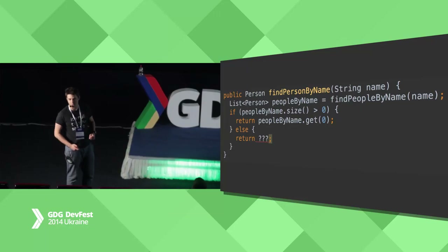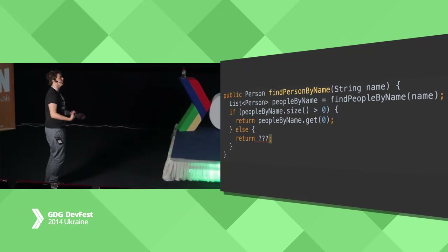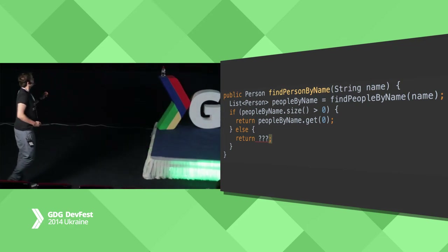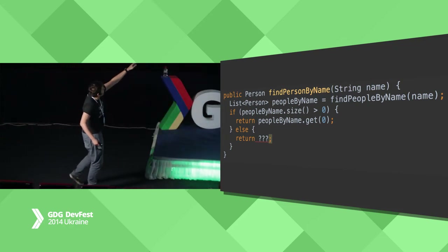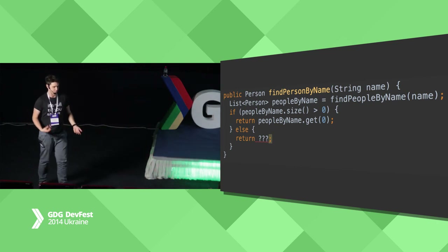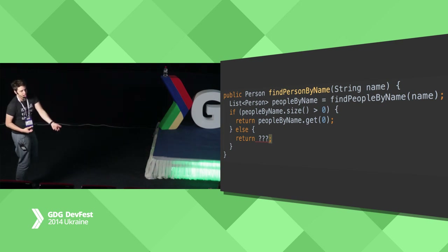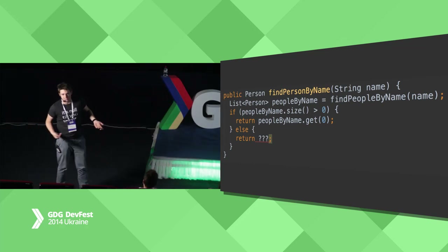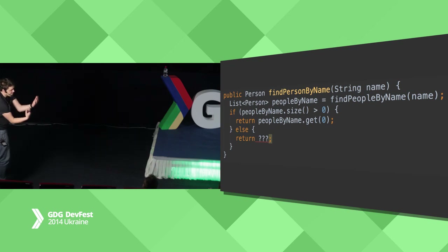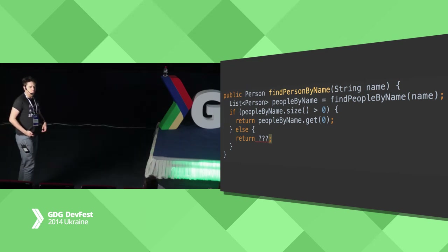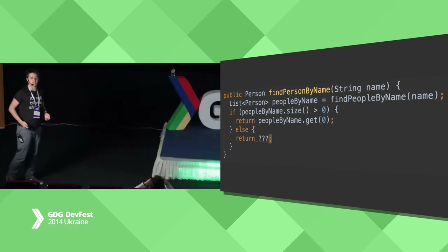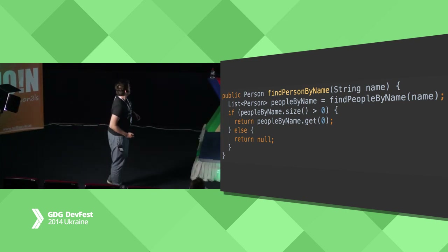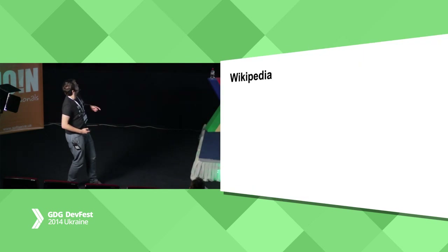So let's start with some code samples. Let's say we have a method that is responsible for accessing the best match — the best person match for a given name. Let's say we have another method called findPeopleByName that returns a list of people. And we are supposed to retrieve the very first one, since probably findPeopleByName performs some ordered SQL query or something. But it may happen that there is no match for a given name. So what should we return? That's the most popular answer for that question.